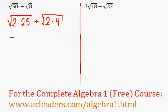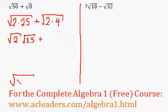So what I can do here is that I can split up the root 2 times 25 into root 2 times the root of 25. That is a property of radicals, by the way. Every time that you're multiplying two numbers inside the radicals, let's pretend that they're x and y.